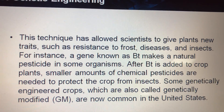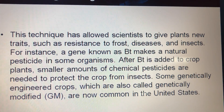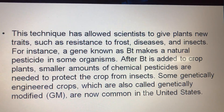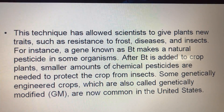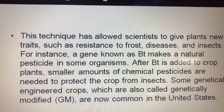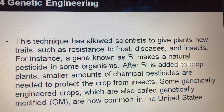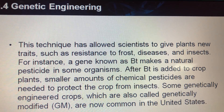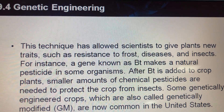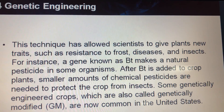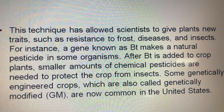This technique has allowed scientists to give plants useful traits such as resistance to frost, resistance to disease, and resistance to insects. For example, there is a gene known as BT which makes a natural pesticide in some organisms. Scientists take this gene and add it to crop plants so the plant becomes resistant to certain insects. These are called genetically modified organisms.